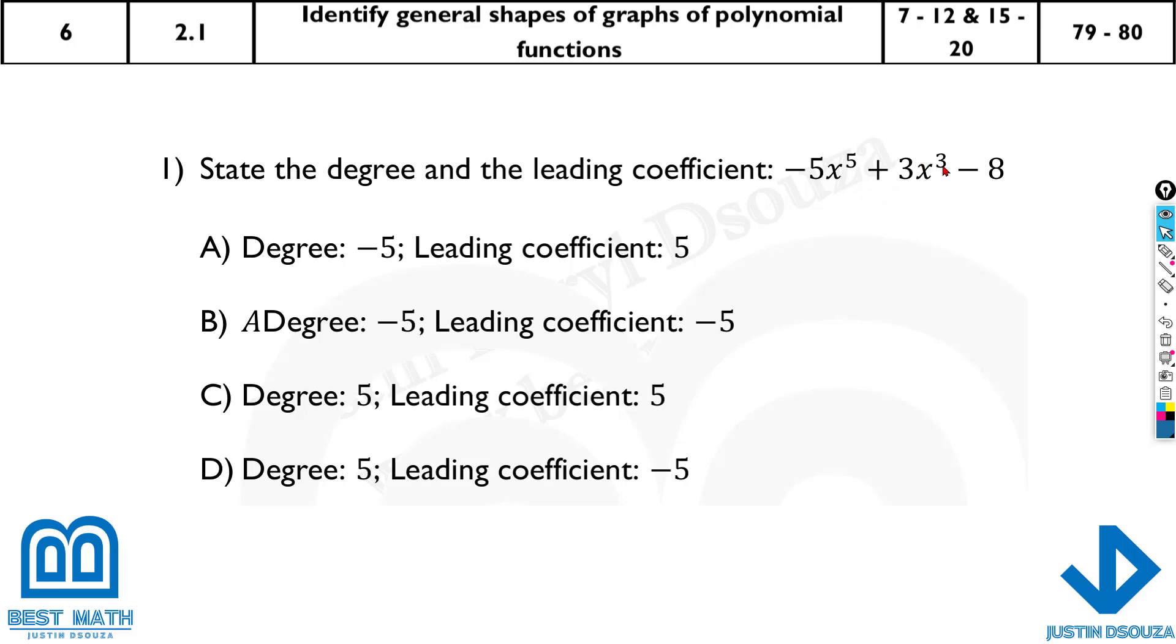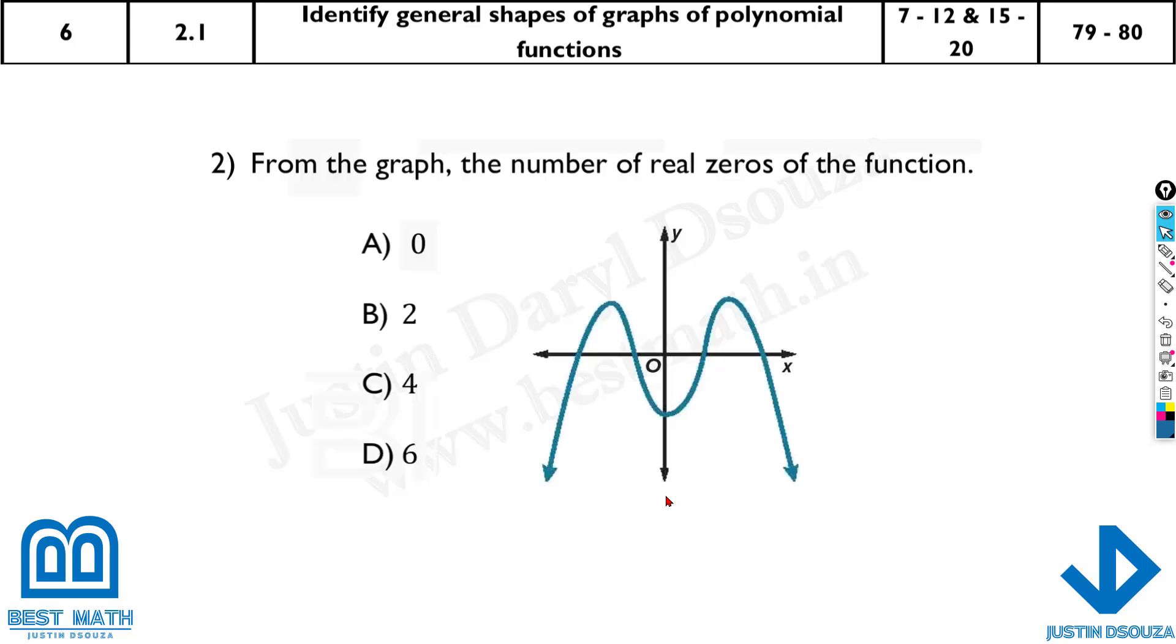You must see what is the highest degree. The highest power or degree is five. So that will be directly your degree, that's five. Now what is the number, the coefficient, behind the highest degree? You don't see three or minus eight because this is not the degree of the function. The degree is the highest power, that's five. The number beside it is minus five. That will be the leading coefficient. It should be five and minus five, option D.